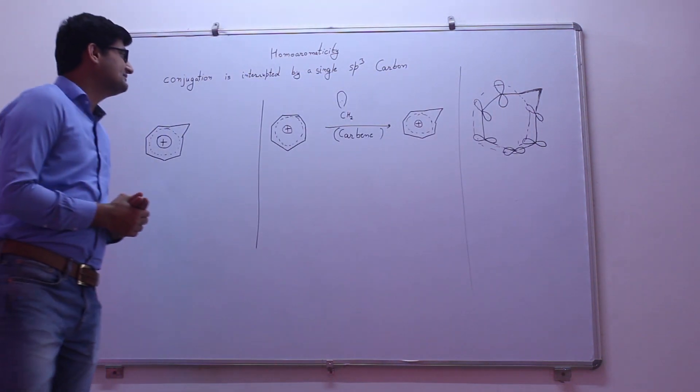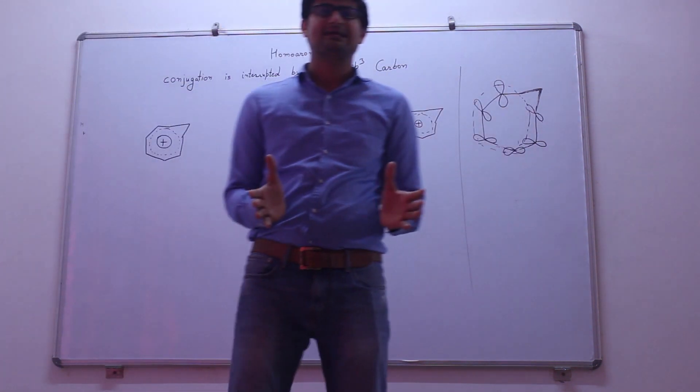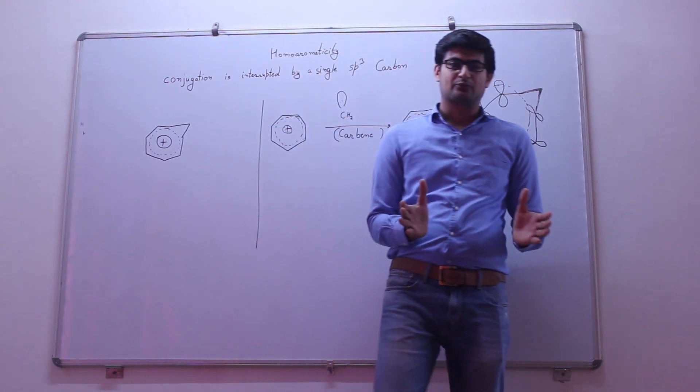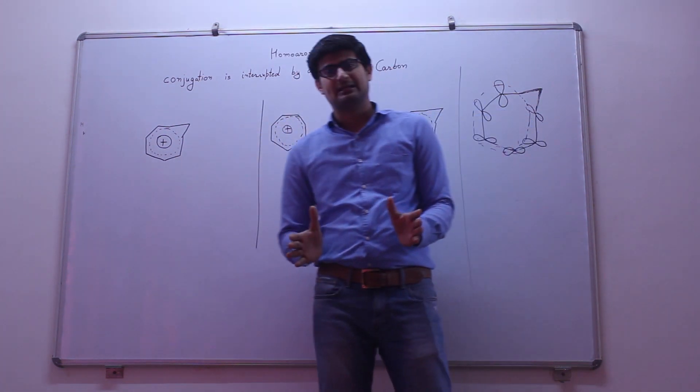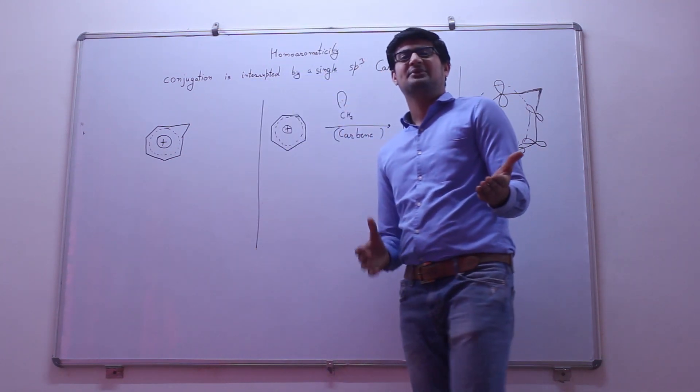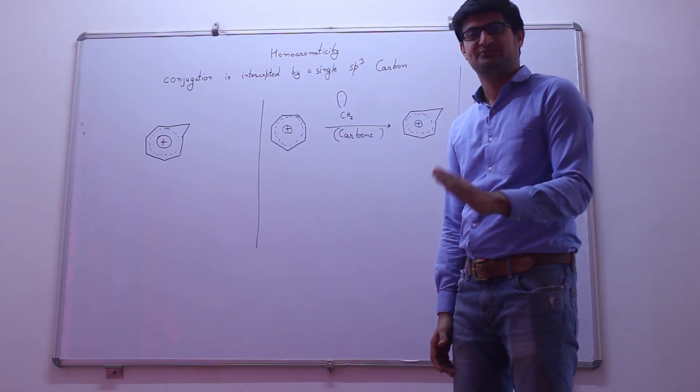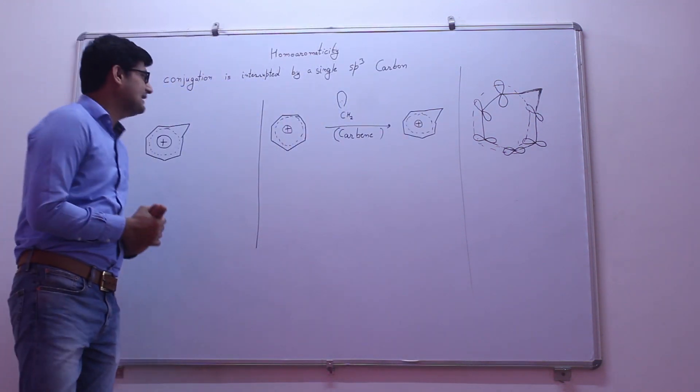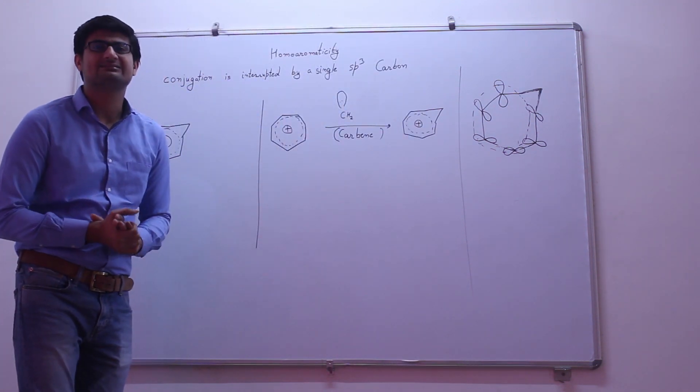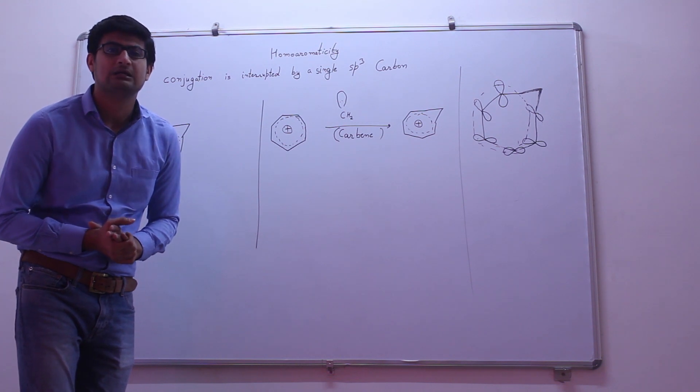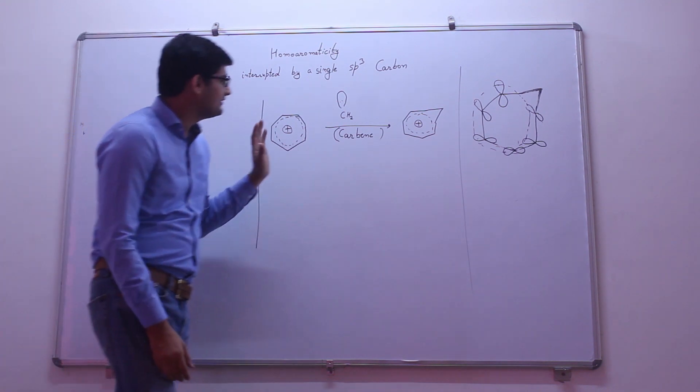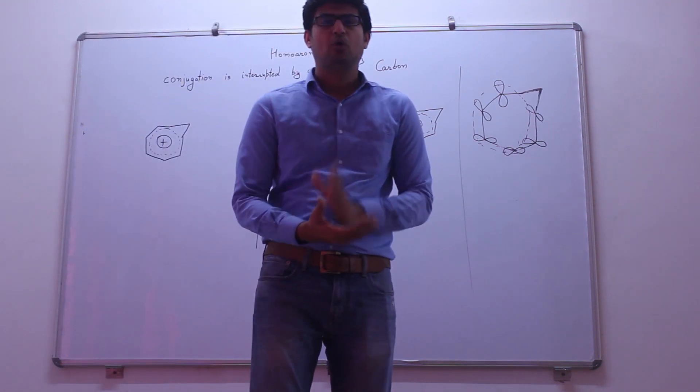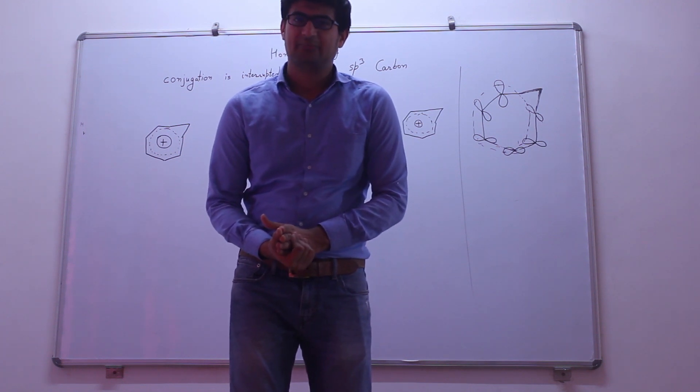As you can see, the conditions for aromaticity are there must be pi electrons, the ring should be planar, and all carbons are sp2 hybridized. In case of homoaromaticity, these conditions are not fulfilled. Neither the ring is planar nor all carbons are sp2 hybridized.